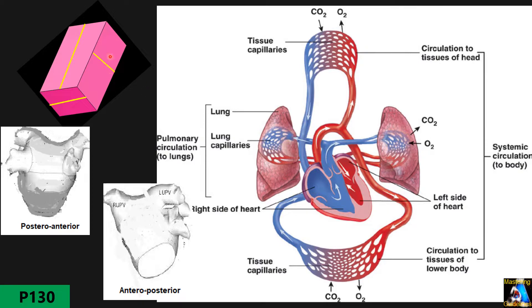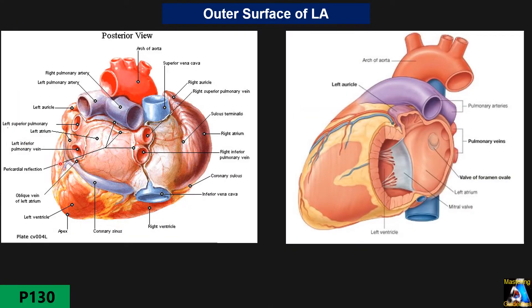The left atrium has three dimensions: length, width, and height. Height is measured on the parasternal long-axis view, while length and width are measured on the apical four-chamber view. Here you can see the general shape of the left atrium from the anterior-posterior view and from the posterior-anterior view.